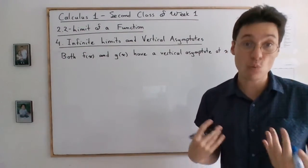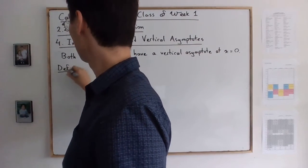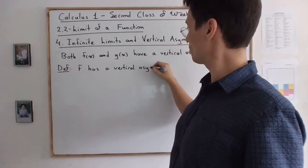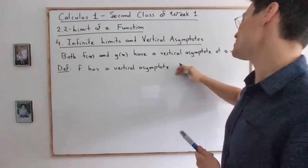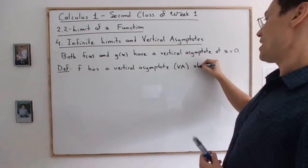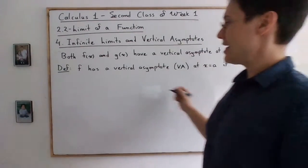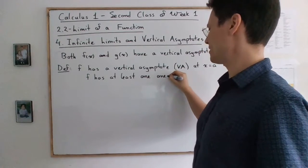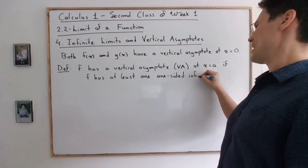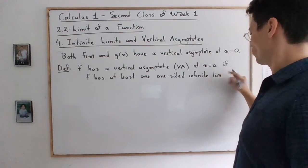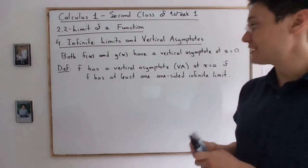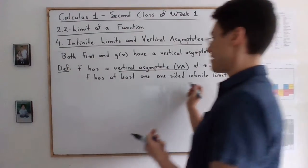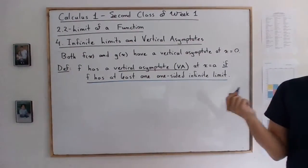And this leads us to define what a vertical asymptote is. So definition, a function has a vertical asymptote, and of course we have an acronym, we will say VA, at x equals a, if f has at least one one-sided infinite limit. So let's just underline this. And the definition is, it's going to be the case if f has at least one one-sided infinite limit.